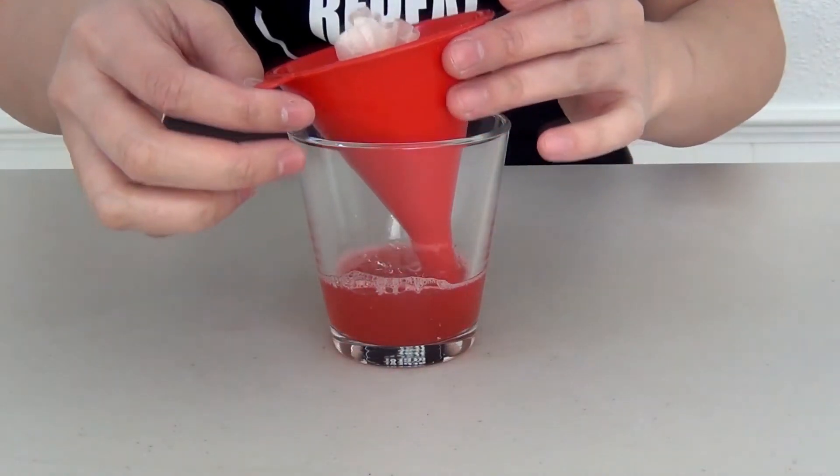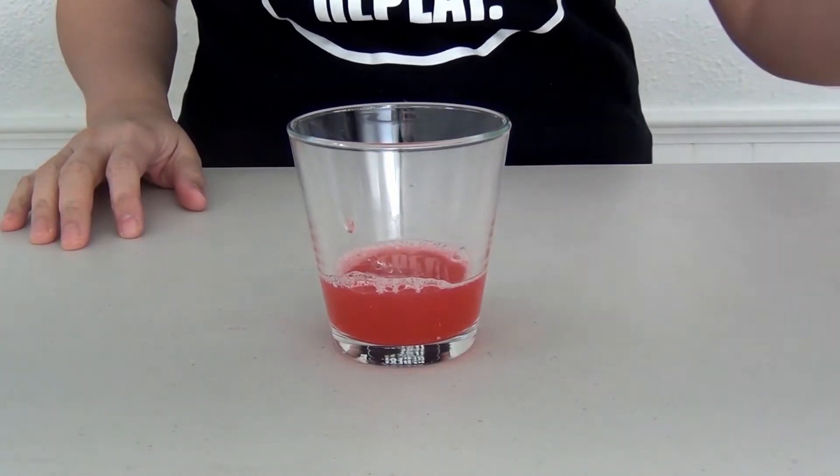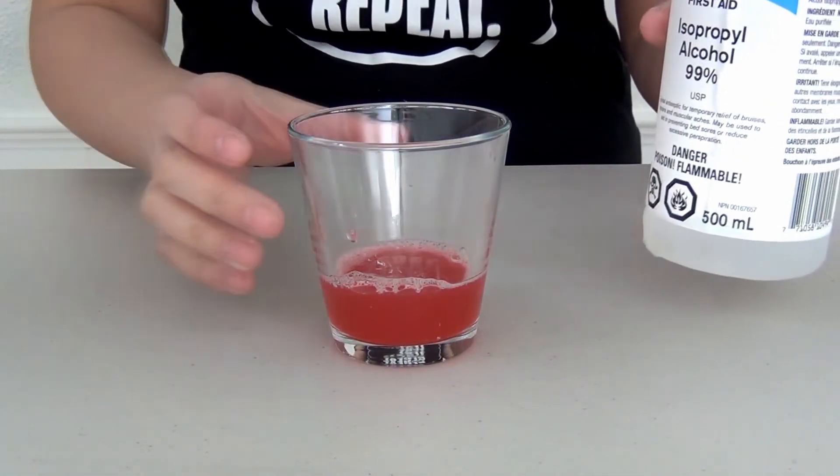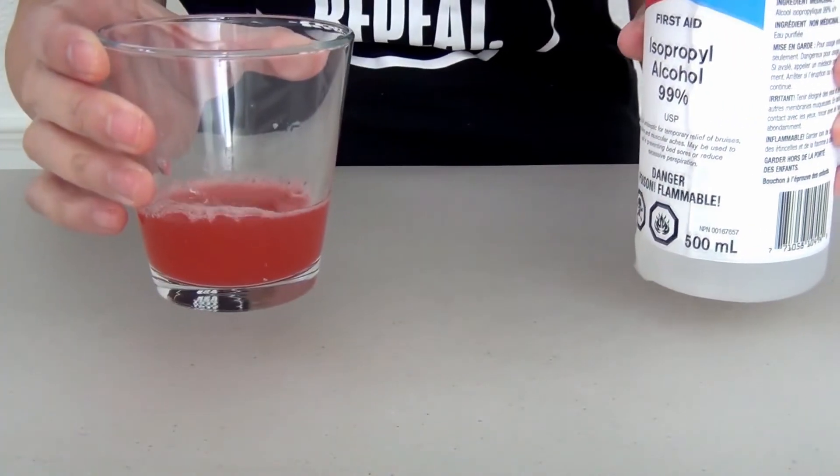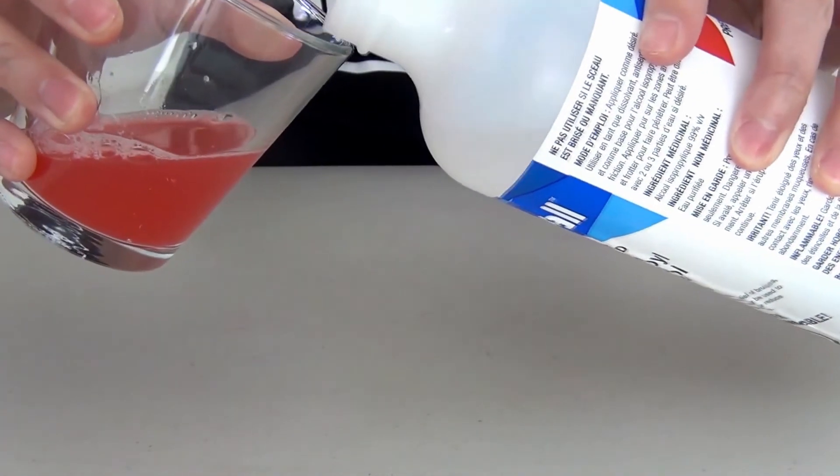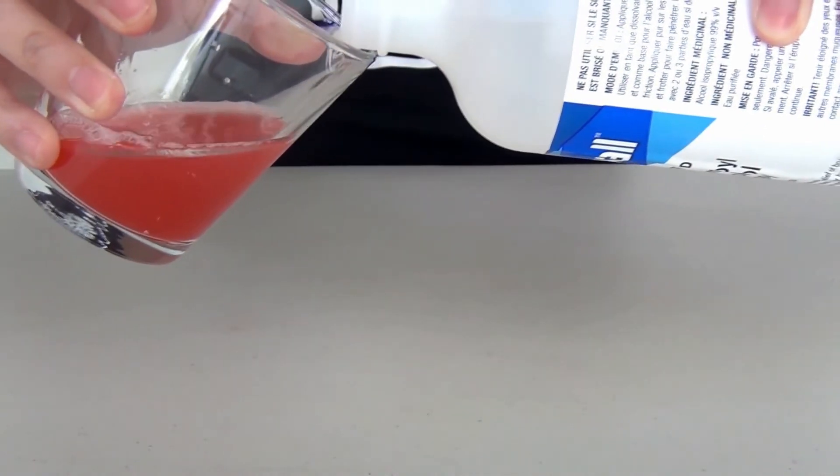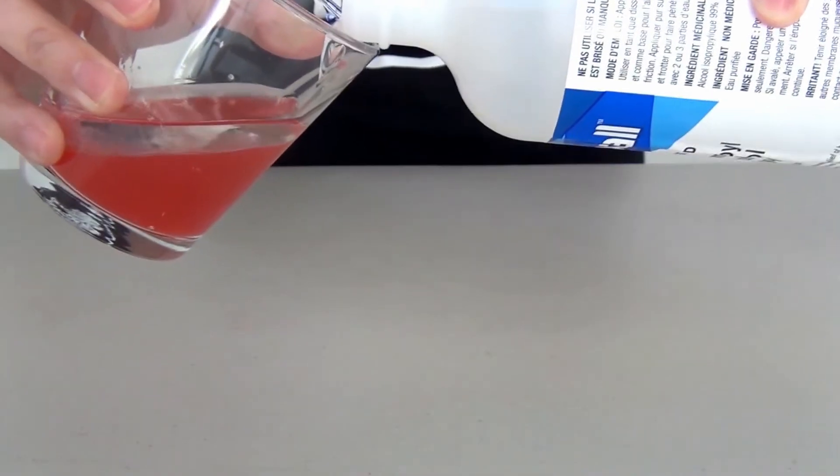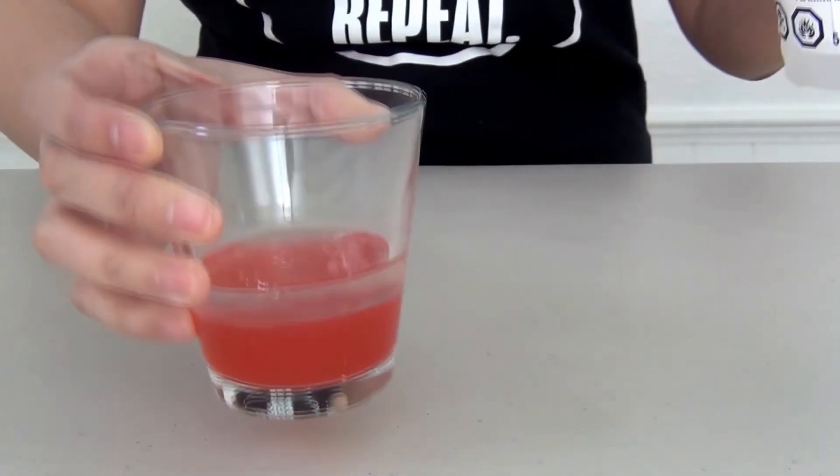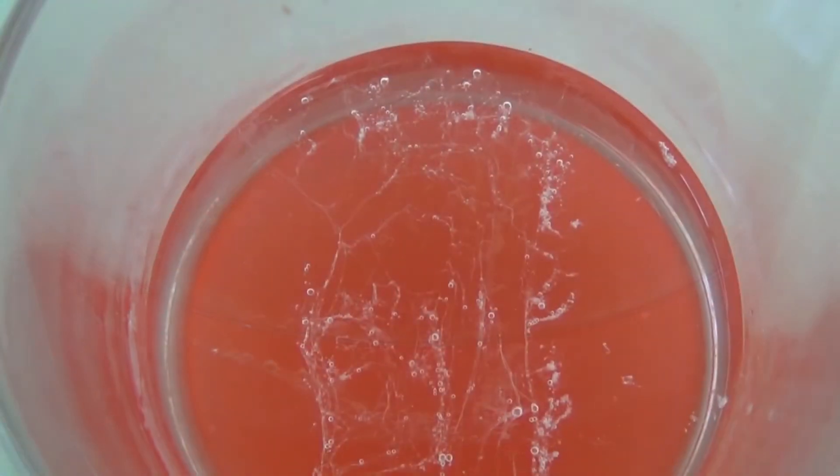You don't need to use it all. Once it's done straining, you can take out your funnel, get your alcohol from the freezer, and you want to gently pour it over the strained liquid. So you want to tilt the glass to the side and gently stream the alcohol along the side of the glass so that the alcohol forms a layer on top of the strawberry mixture. You want to give this a couple of minutes to sit and watch what happens.